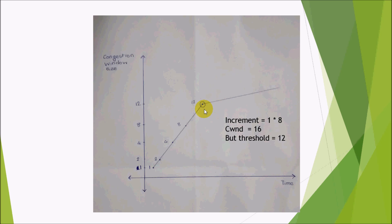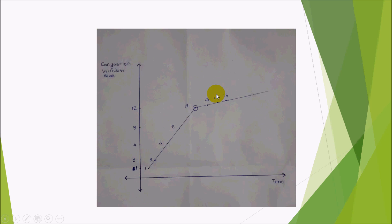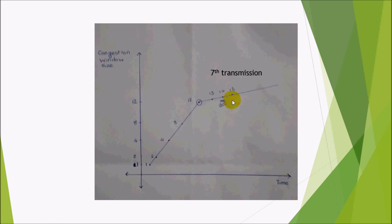Now we take precaution so that congestion should not occur. The window size will no longer be incremented by the earlier formula; instead it will be incremented by the factor MSS. So after 12, it increments to 13, then 14, 15, and so on. We have drawn the graph and we need to calculate the 7th transmission. Counting: 1, 2, 3, 4 — the 7th transmission gives a window size of 14.